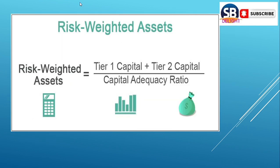For example, if you take any one bank, we have three categories of borrowers: one is businessman, two is unemployed, and three is salaried. The bank gives a loan of 10 lakhs to each of them.